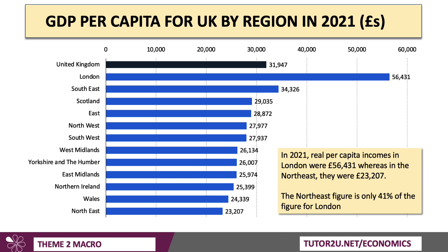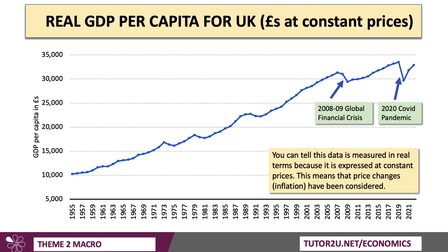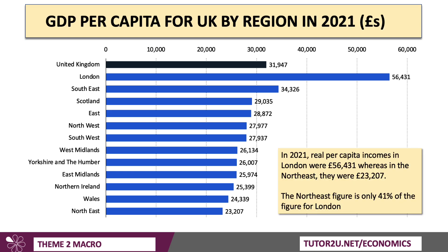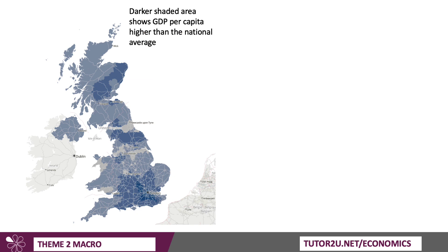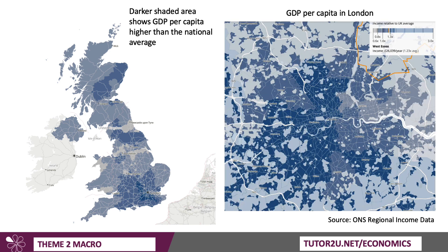National data for GDP could often hide regional variations, but critically, there can also be sub-regional differences. The darker shaded areas here show GDP per capita higher than the national average. There is obviously a north-south divide, but it's often more granular than that. Looking at London specifically, the darker the shaded areas, the higher the per capita incomes, and you can see there is a significant west-east split. Parts of East London are significantly poorer than neighbouring boroughs and areas in Greater London. So when you get GDP per capita data for a country, keep in mind there will be significant variations at regional and sub-regional level.